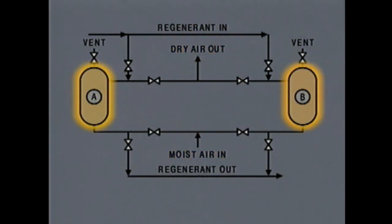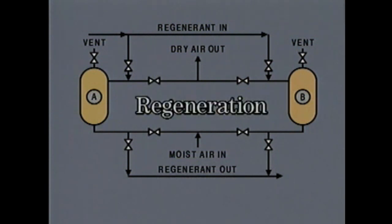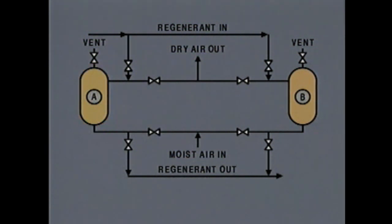The air dryer system takes in moist air from the atmosphere and provides an uninterrupted supply of dry air. Each dryer contains material called a drying agent that traps moisture as the air passes through the dryer. Periodically, the moisture is removed from the drying agent by a process called regeneration. Only one dryer is required to be in service at a time — while one dryer is in service, the drying agent in the other dryer is regenerated to remove trapped moisture.